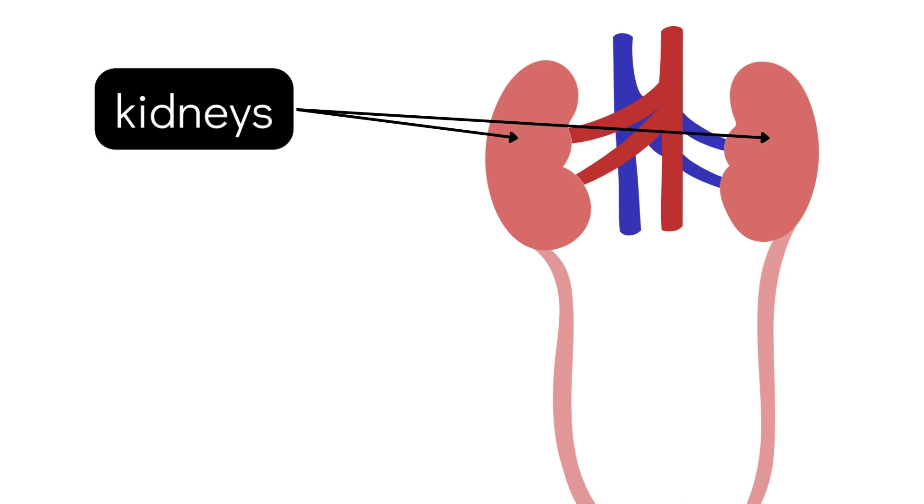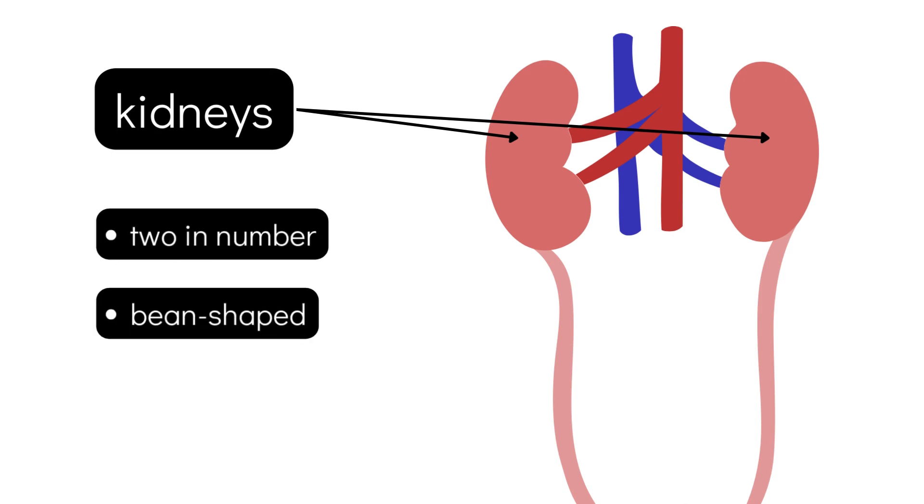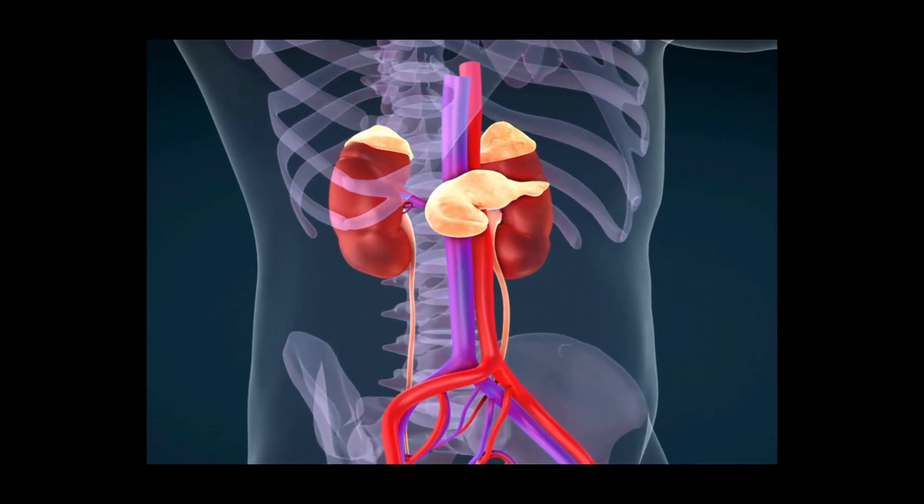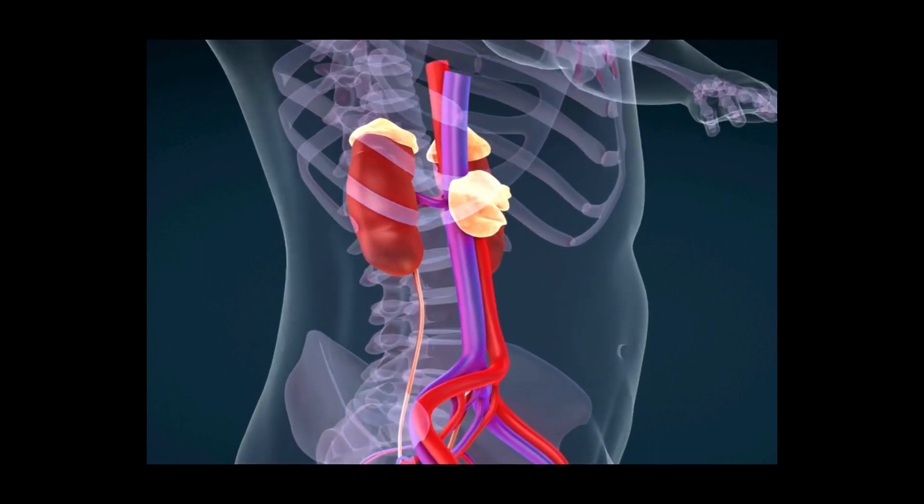Kidneys. Kidneys are two in number. They are bean shaped, but of course, bigger in size. Kidneys are located one on each side of the spine at the level of our liver.